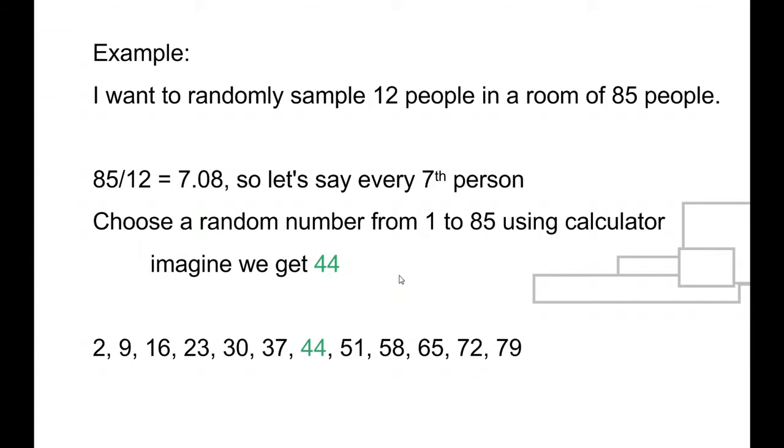So if we're doing a rule such as every 7th person, we randomly pick our starting point, and it could end up in the middle like it did here. It could end up closer to one of the ends, and you go every 7th person in both directions.